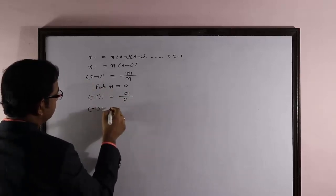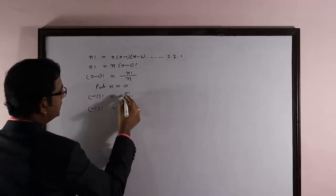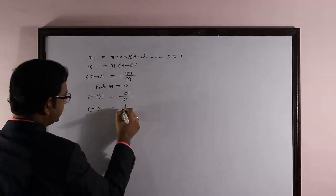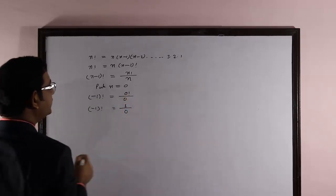So negative 1 factorial is equal to 0 factorial value. You already know 1 and 1 by 0.